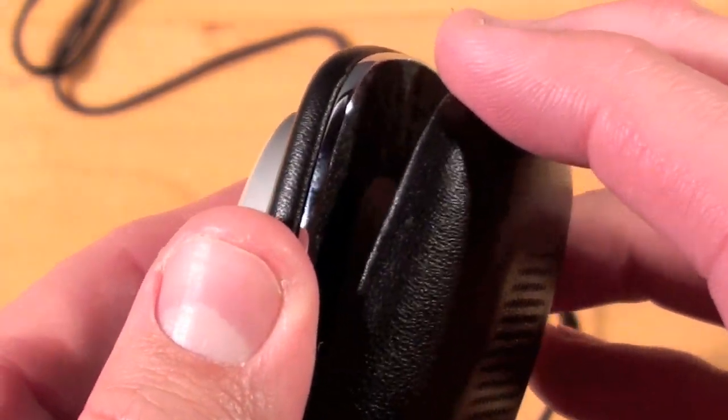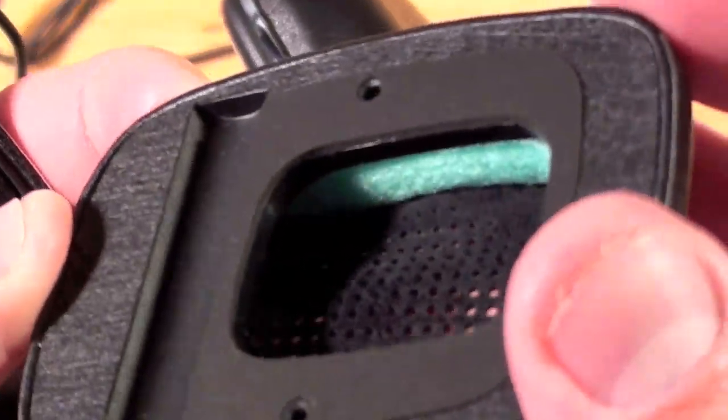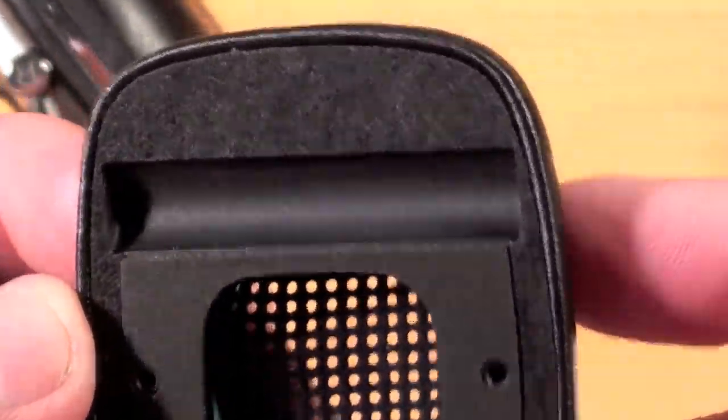The ear pieces themselves are held on magnetically and can be easily removed or replaced. Inside you can see the memory foam that pads the ear piece.